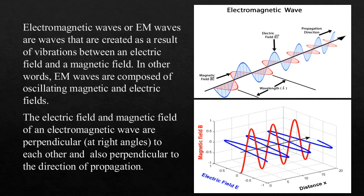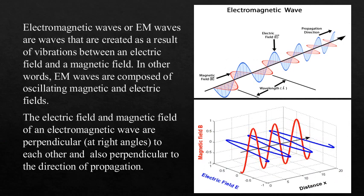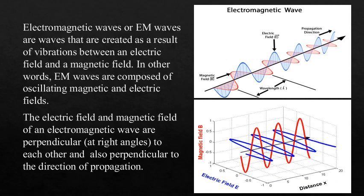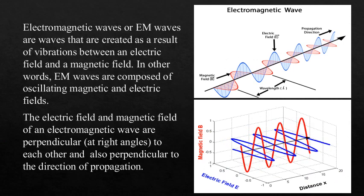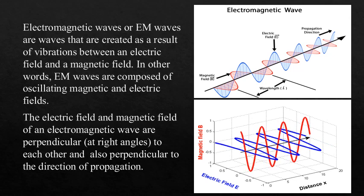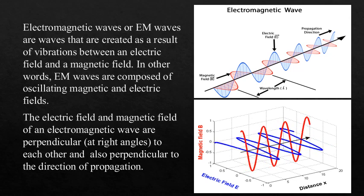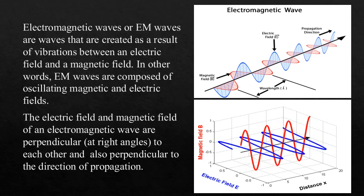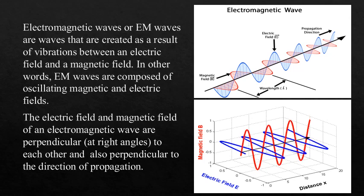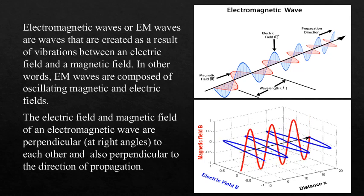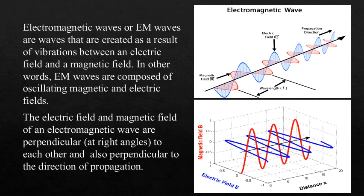Electromagnetic waves, or EM waves, are waves that are created as a result of vibration between electric and magnetic fields. In other words, EM waves are composed of oscillating magnetic and electric fields.